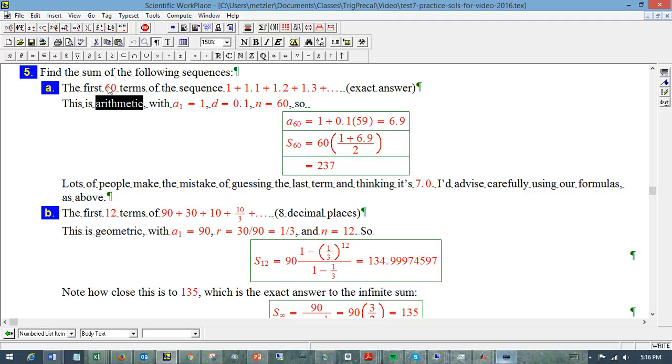If it's a lot of terms, and it's neither arithmetic or geometric, it's going to be really hard at our level to find formulas for summations, shortcut formulas for the summations besides the ones we know. But this is indeed arithmetic. The common difference is 0.1. The first term is 1, and n is given here, because it's the first 60 terms.